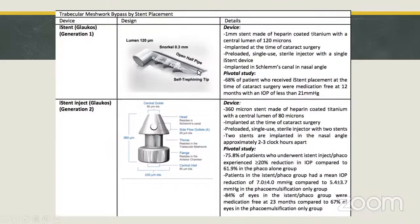The first generation eye stent is a 1mm stent made of heparin-coated titanium with a central lumen of about 120 microns. It can be implanted during cataract surgery and is a preloaded single-use sterile injector with a single device implanted in Schlemm's canal in the nasal angle. The second generation eye stent inject is a 360-micron stent, also heparin-coated titanium, with a central lumen of about 80 microns. It is preloaded, single-use, with two stents in the injector, implanted approximately 2 to 3 clock hours apart in the nasal angle.